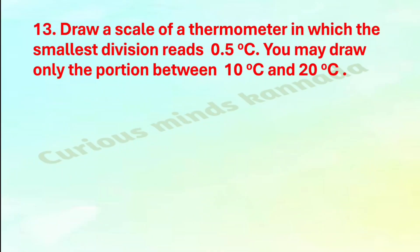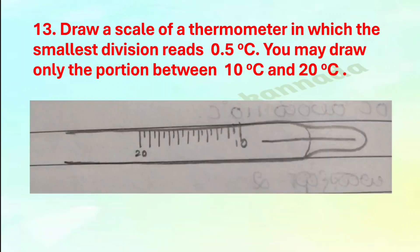Thirteenth question: Draw a scale of a thermometer in which the smallest division reads 0.5 degree Celsius. You may draw only the portion between 10 degree Celsius and 20 degree Celsius. You can draw this thermometer in your notebook.